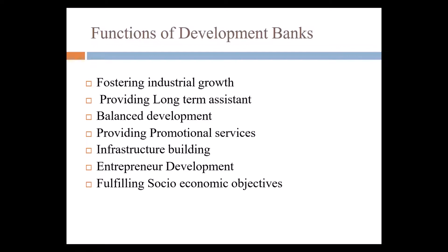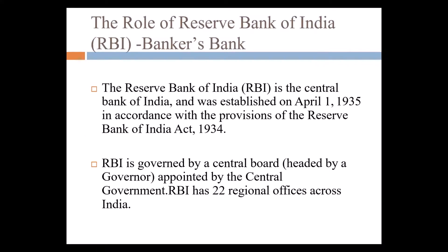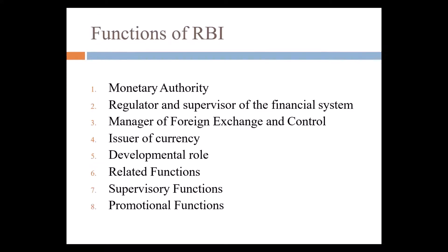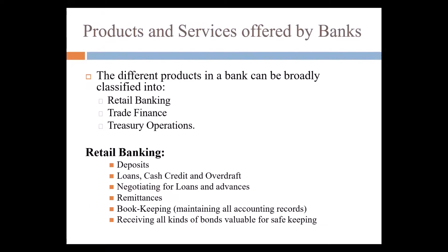We have talked in detail about commercial banks earlier. What are the different types of products offered by commercial and cooperative banks? They include retail banking, trade finance, and treasury operations. Retail banking covers deposits, loans (including cash credit and overdraft), and negotiations for loans and advances.